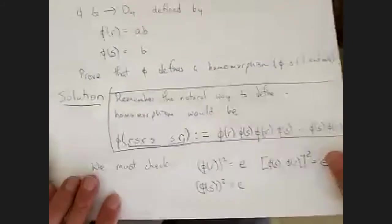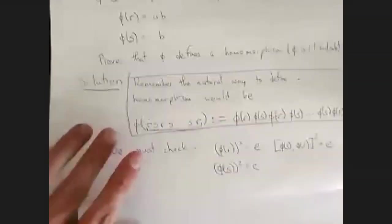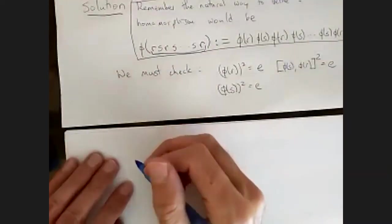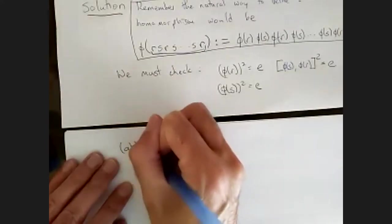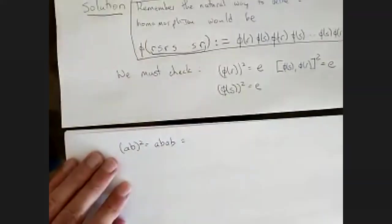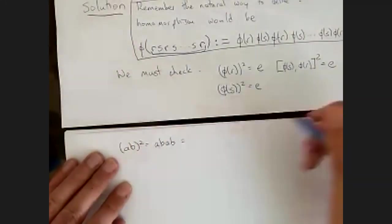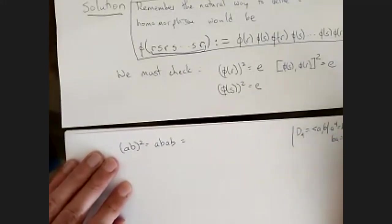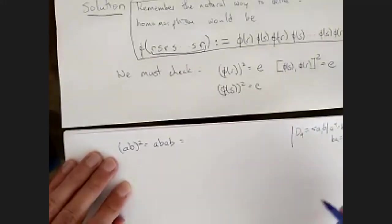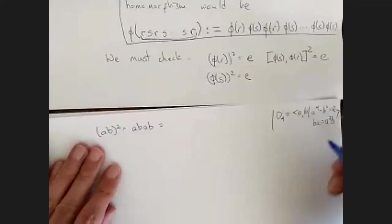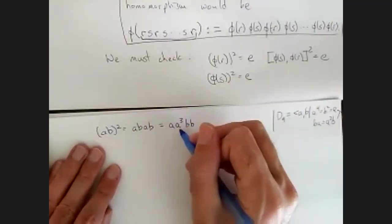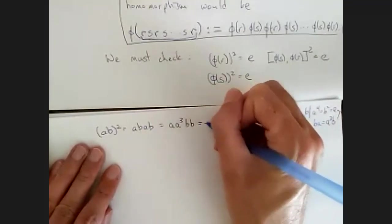This is just some equations in D4 we have to check. Phi(R) = AB, so we have to check AB squared. That's AB·AB. Remember BA is just A³B — we're working in D4. So we have AA³·BB, which is A⁴B², which is identity times identity, which is identity.